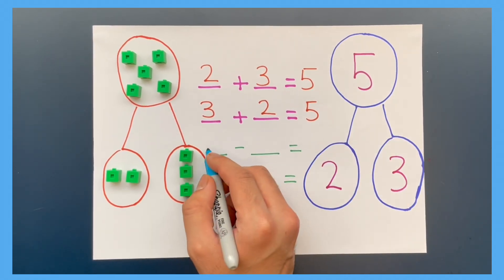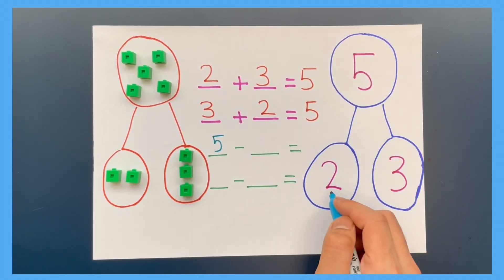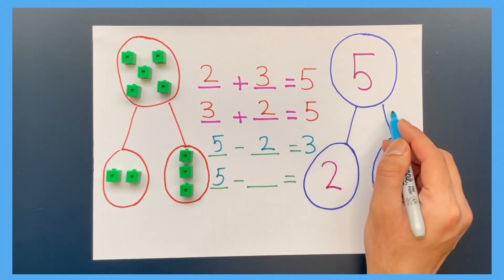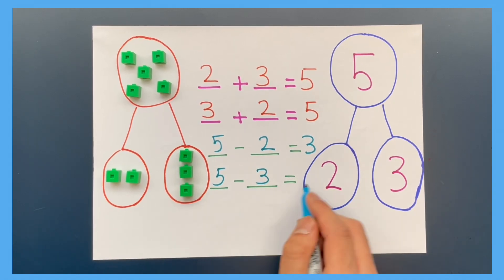We know the model is five take away two leaves us with three. Again, five take away three equals two.